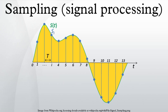When a bandpass signal is sampled slower than its Nyquist rate, the samples are indistinguishable from samples of a low frequency alias of the high frequency signal. That is often done purposefully in such a way that the lowest frequency alias satisfies the Nyquist criterion, because the bandpass signal is still uniquely represented and recoverable. Such undersampling is also known as bandpass sampling, harmonic sampling, IF sampling, and direct IF to digital conversion.